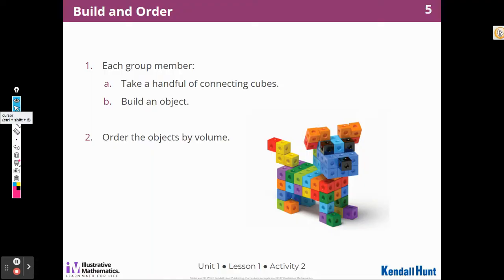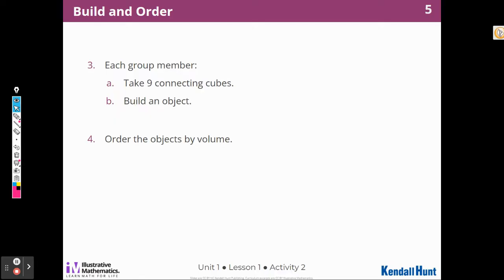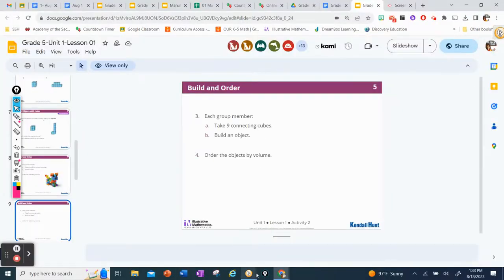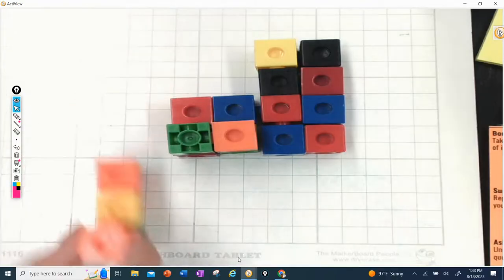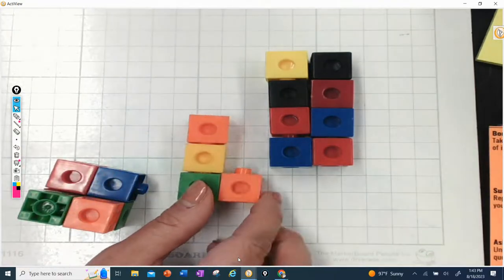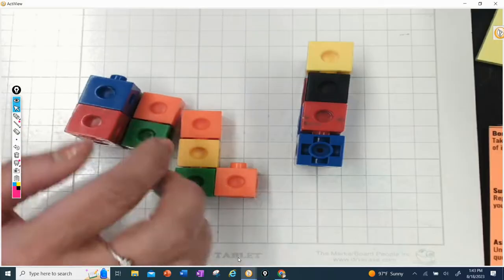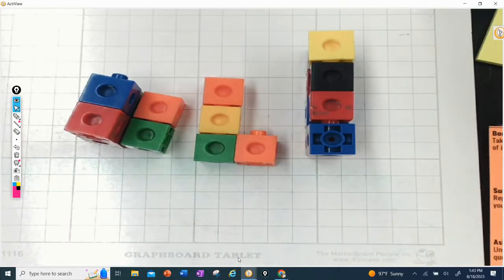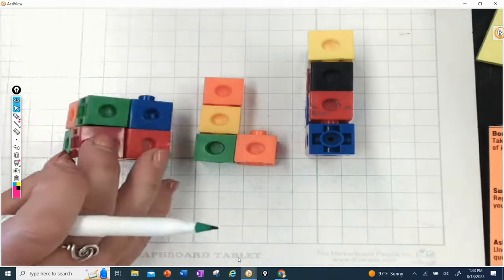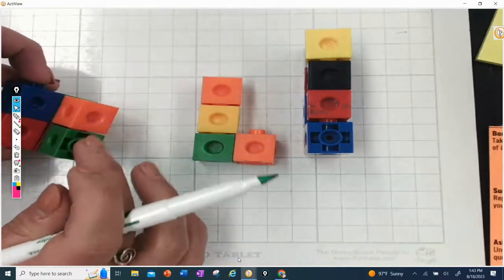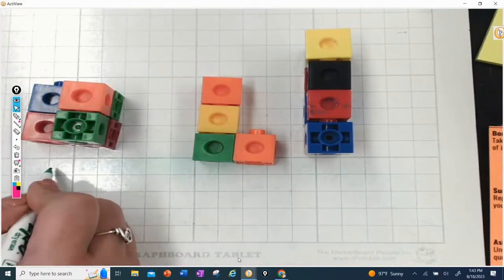So now I'm going to do my next activity called build and order. Your teacher will give you a handful of connecting cubes and you're going to get to build any kind of object you want. Then you're going to compare with your classmates and order those objects by volume. So we're going to get nine cubes, build an object, and then order those by volume. So I have three objects here that I have built. And you can see that they're all different shapes and different amounts of cubes. So when I look at them really closely, I notice that this one has a group of four, one, two, three, four, and then two more on top. So four plus two is six cubes.